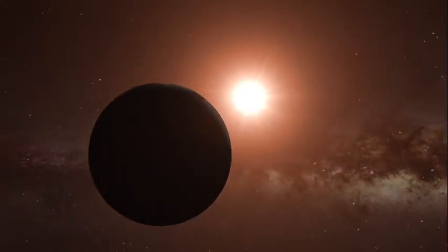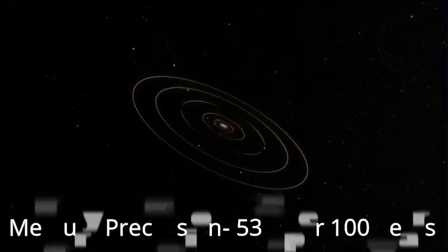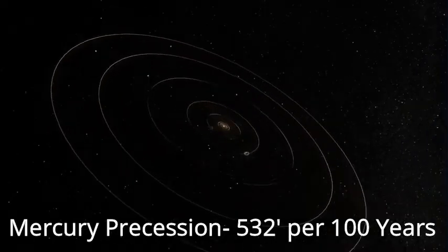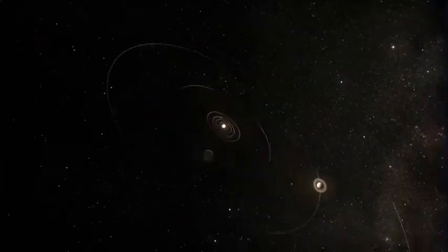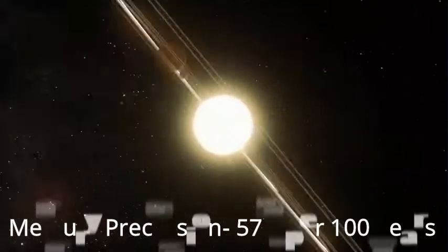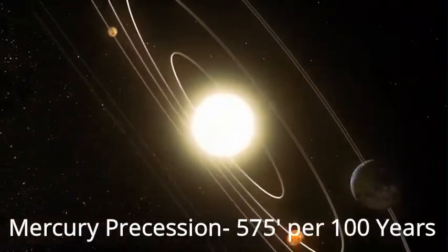According to Newton's theory, the orbit of planet Mercury was changing by an angle of 532 minutes per 100 years, but in actual it is changing by 575 minutes per 100 years.